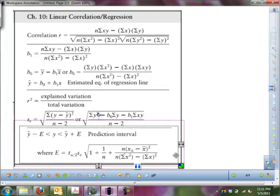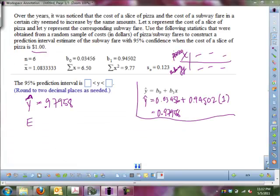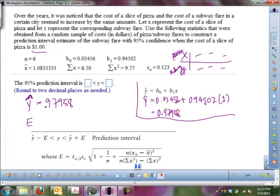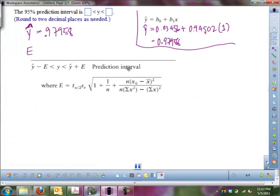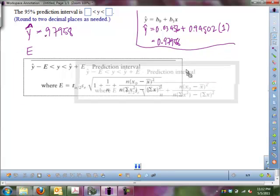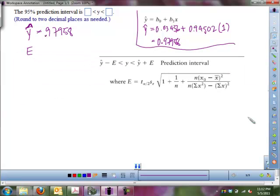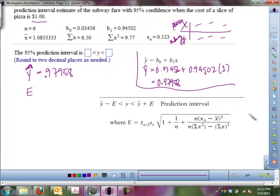Our margin of error is given by this T sub alpha over 2 times S sub E times the square root of this big long thing. So, let's just copy that over and put that in our notes to find our prediction interval. We need this formula. So, let's see what we have here. We have, or what we need is, we need our T sub alpha over 2.